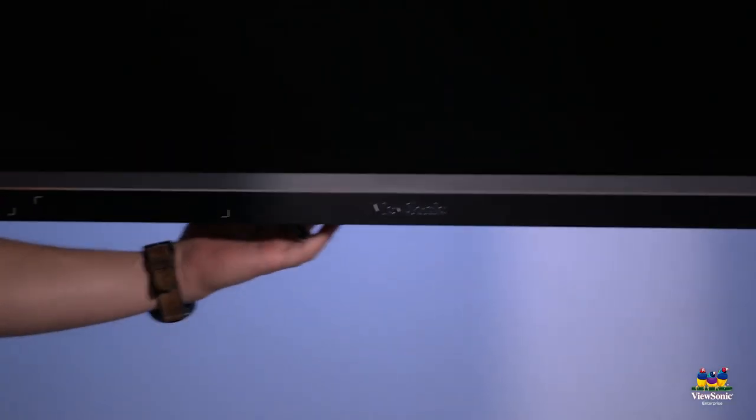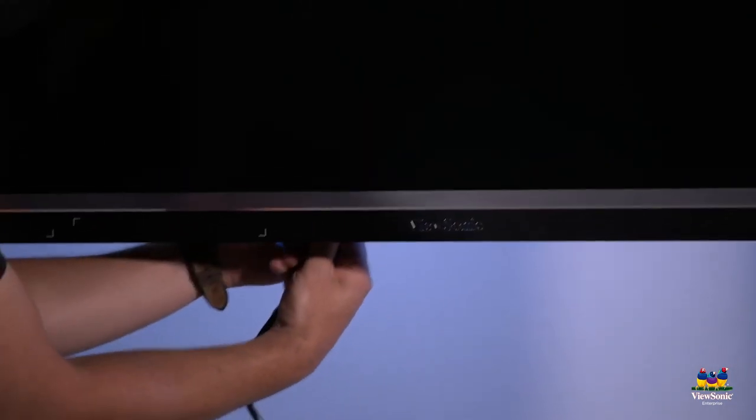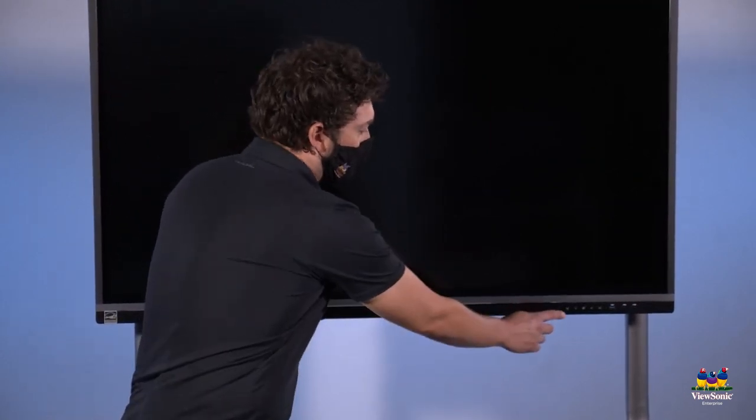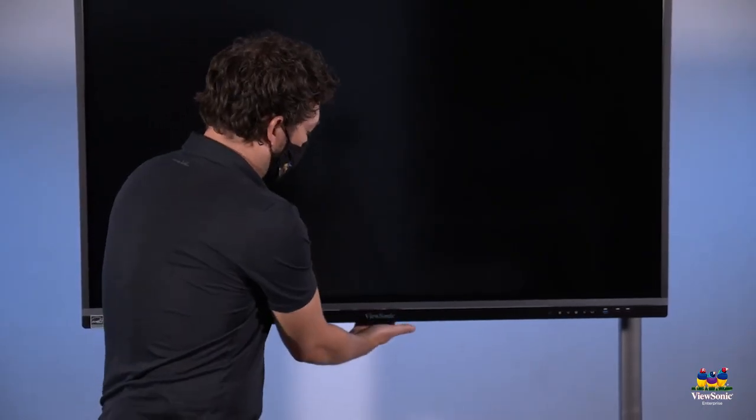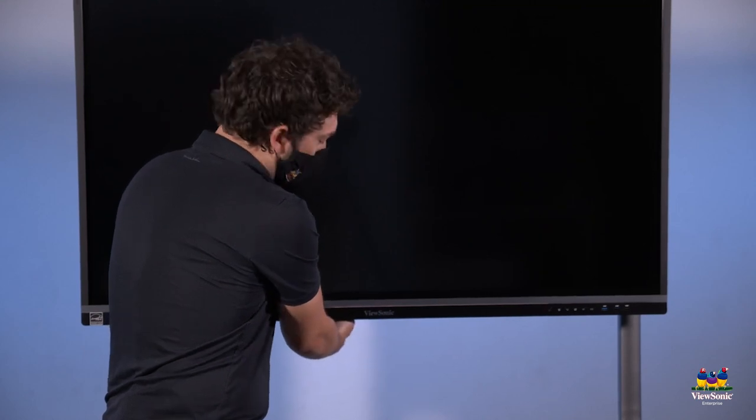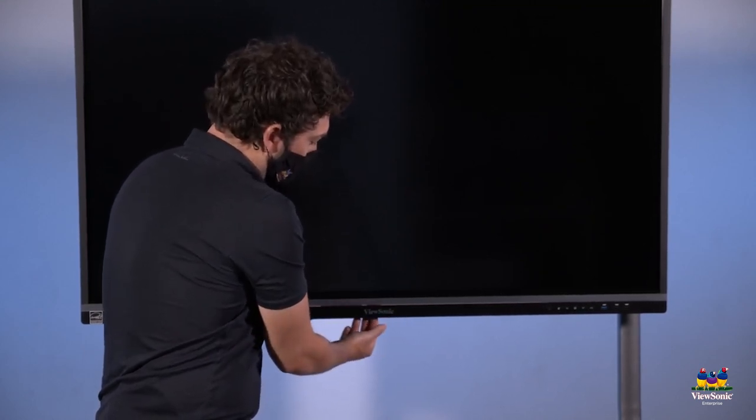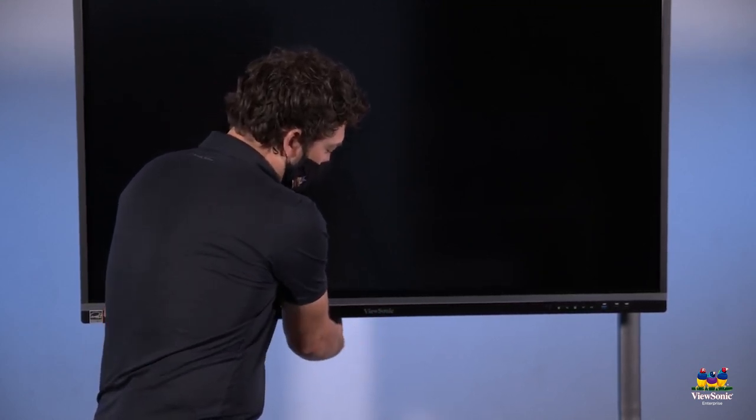Next we'll need to install power. Locate the ViewSonic logo, and just to the left of it underneath the panel is where we can plug in our power cable. Once you have the board plugged in, this is going to be your power button. Now you'll notice that the power button is blank, it has no light on it, so we actually need to turn on the power switch which is where the plug goes in, just to the left of the ViewSonic logo. Locate where the plug is plugged into the board, and then just to the left of it is a little switch.